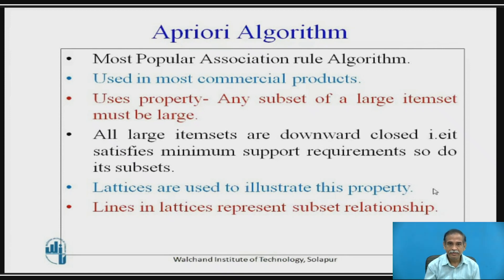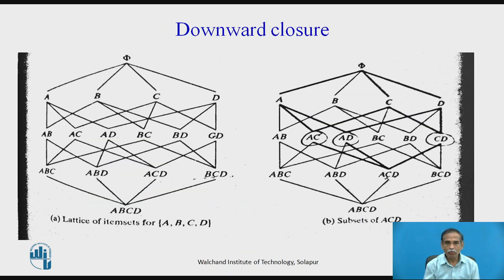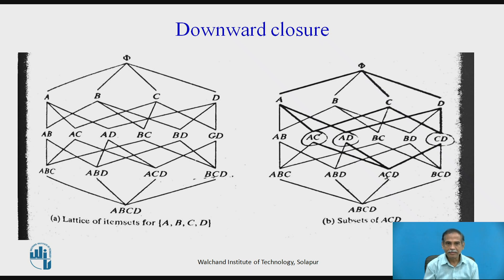We use a downward closure going from an empty set phi to adding single item sets: a, b, c, and d. Then there are combinations of item sets: a,b; a,c; a,d; b,c; b,d; c,d; then 3-item sets and 4-item sets and so on. The lattice keeps growing from top to bottom, maintaining a downward closure.